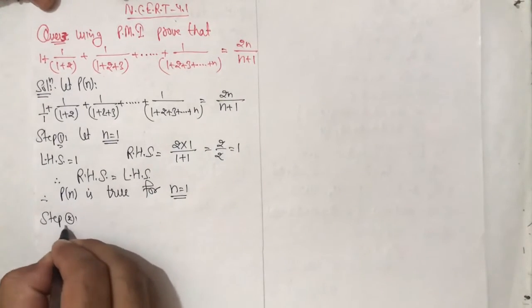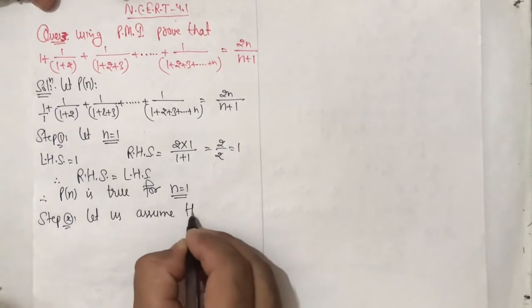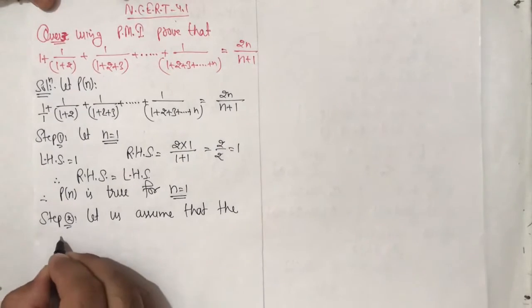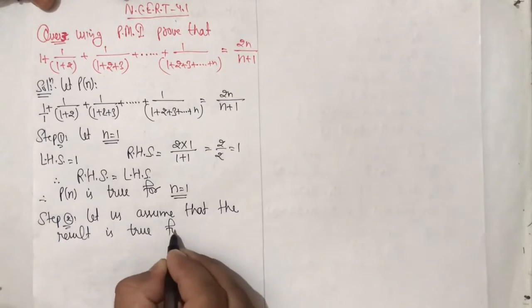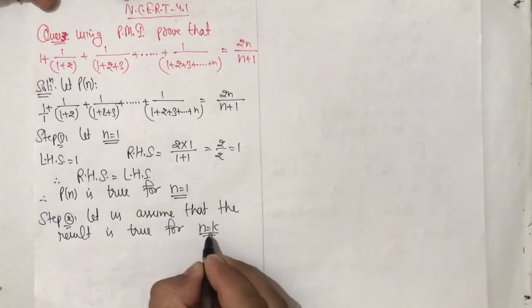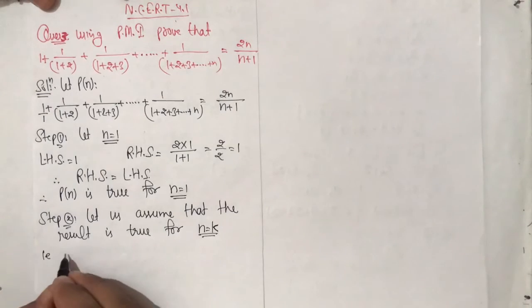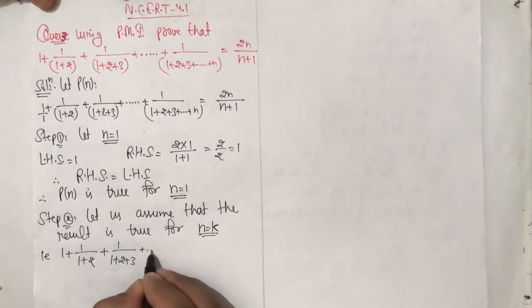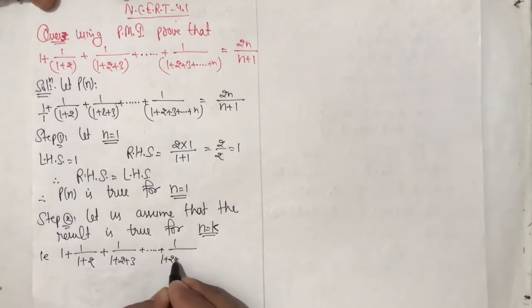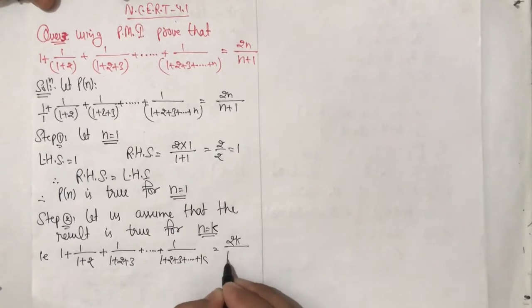Step 2: Let us assume that the result is true for n equal to k, where k is a natural number. So for some natural number k, we assume the result is true. That is: 1 plus 1 upon (1 plus 2) plus 1 upon (1 plus 2 plus 3) and so on, 1 upon (1 plus 2 plus 3 and so on up to k) is equal to 2k upon (k plus 1). Call this equation 1.